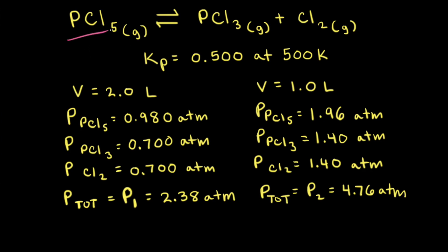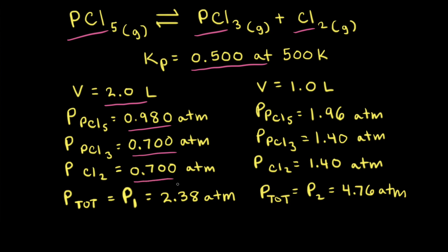Phosphorus pentachloride will decompose into phosphorus trichloride and chlorine gas. Kp for this reaction is equal to 0.500 at 500 Kelvin. This reaction is at equilibrium in a reaction vessel with a volume of 2.0 liters. The equilibrium partial pressure of PCl₅ is 0.980 atm, PCl₃ is 0.700 atm, and Cl₂ is 0.700 atm.